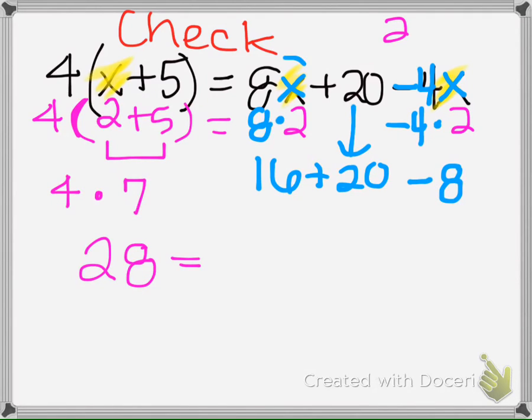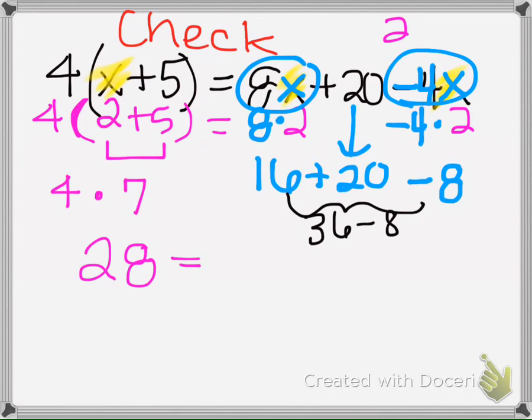And then we bring down this positive 20, because remember we multiply before we add in order of operations. So now I can combine all of this together, so that would be 36 minus 8, which is 28.